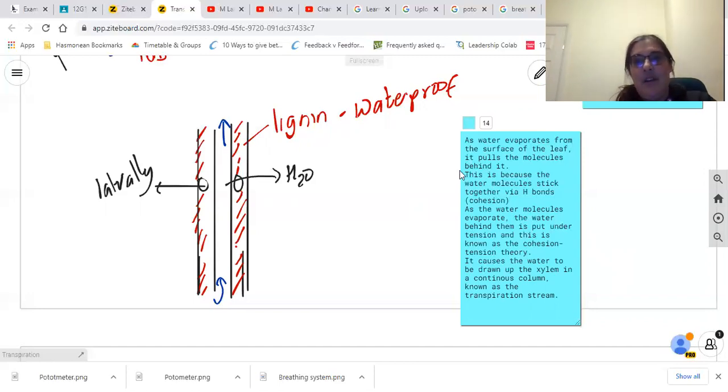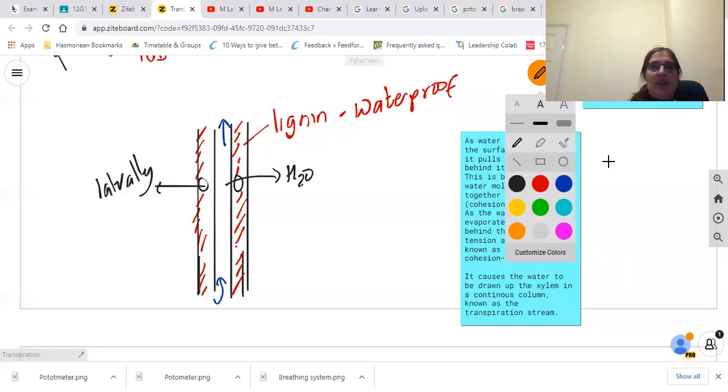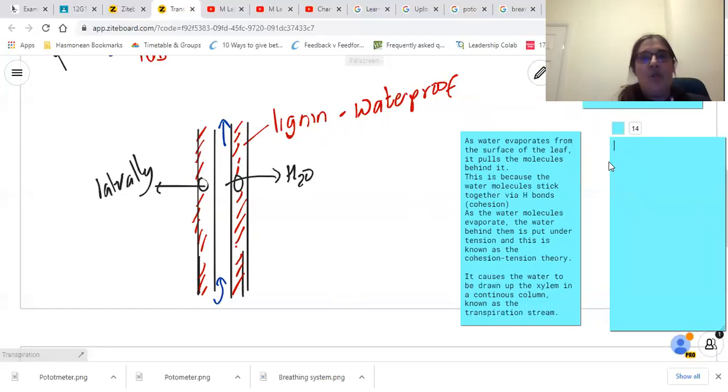There is another thing that happens as well as the cohesion tension theory, and that is the idea that water molecules can carry out adhesion. Adhesion is the idea that they stick to the walls of the actual xylem. Imagine it like somebody sticking to the sides with sticky pads and climbing their way up the xylem. So water molecules also adhere to the xylem walls, which enables them to move up the xylem. You've got the combination of the cohesion tension theory and the adhesion which causes the water molecules to rise.